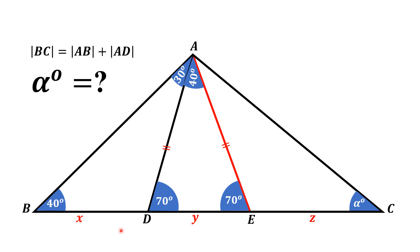We assign variable names: BD equals x, DE equals y, and EC equals z. Now focusing on triangle AEB, we can see that angle ABE is 70 degrees and angle AEB is also 70 degrees, so triangle AEB is another isosceles triangle. Therefore, length BE equals length BA, meaning AB equals x plus y.